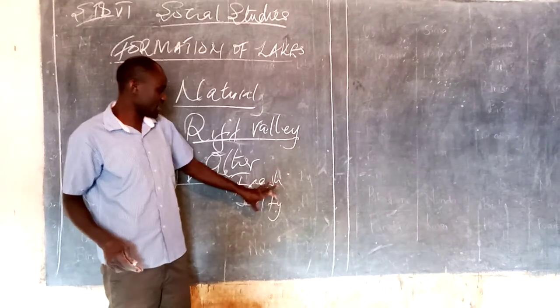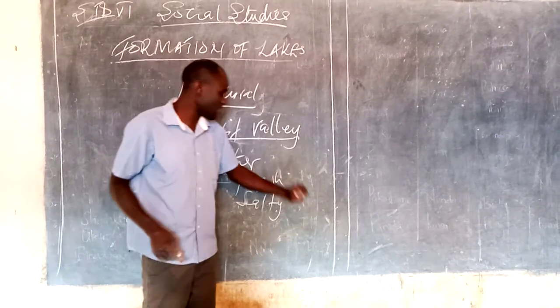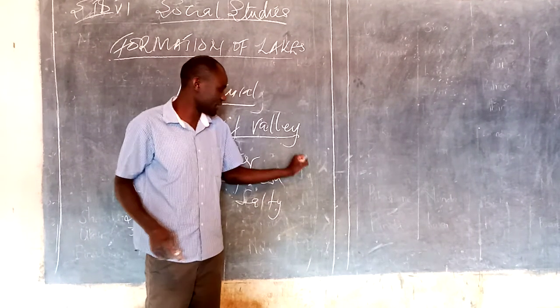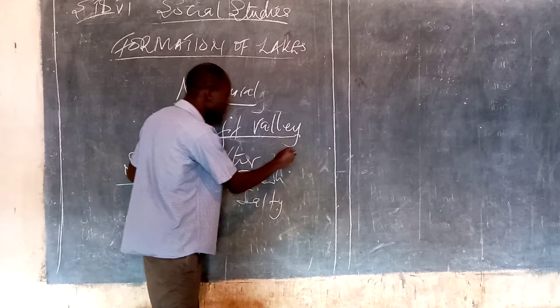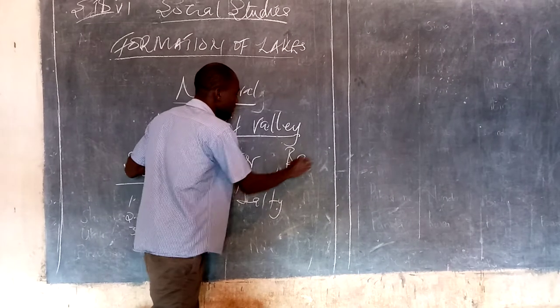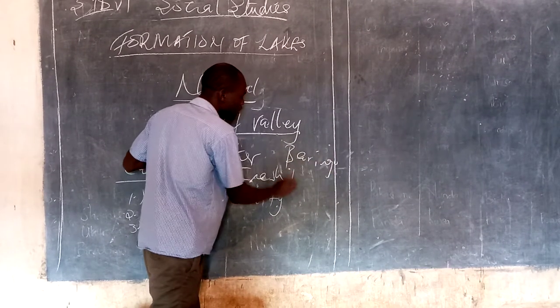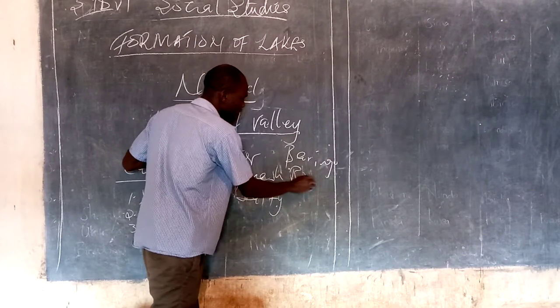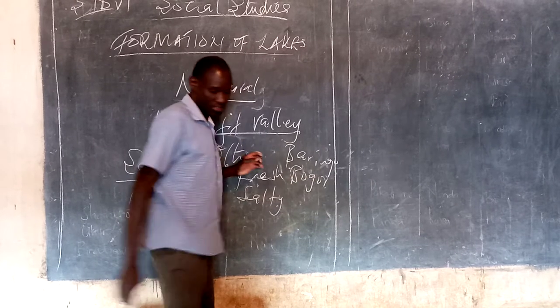Many students get confused between Baringo and Bogoria — which one is fresh and which one is salty. Baringo is fresh, and Bogoria is salty.